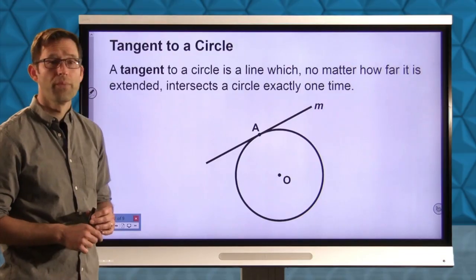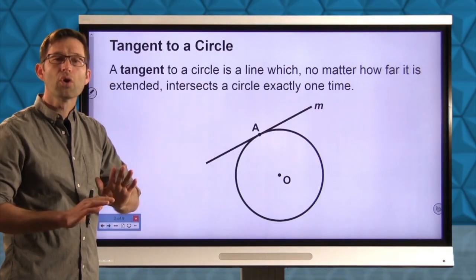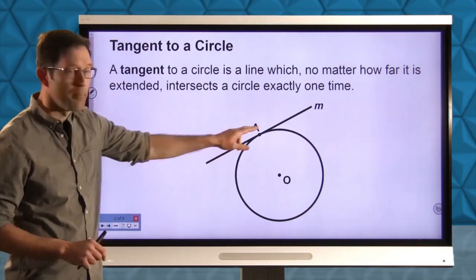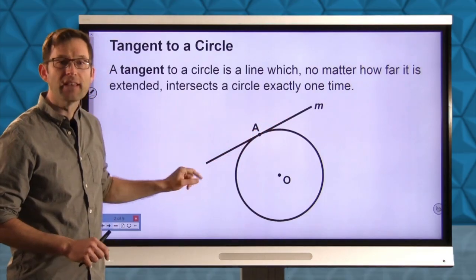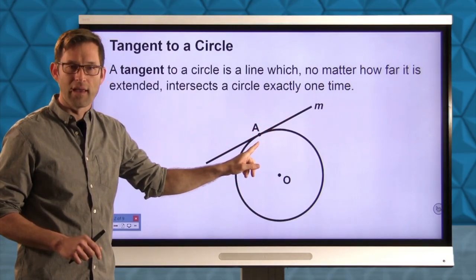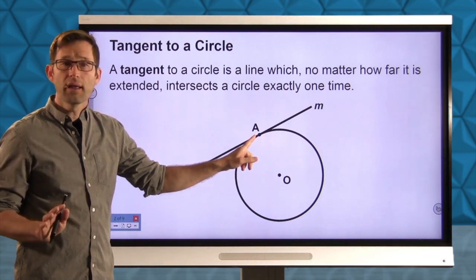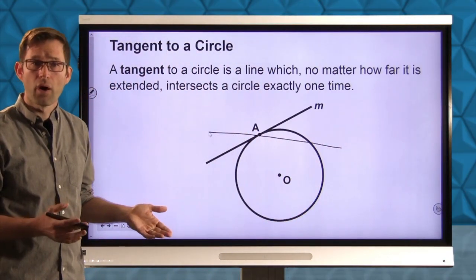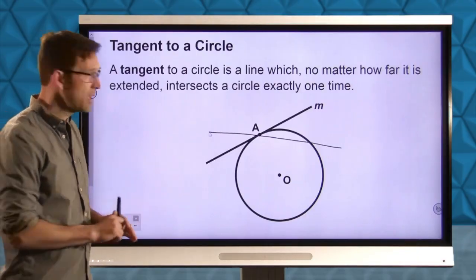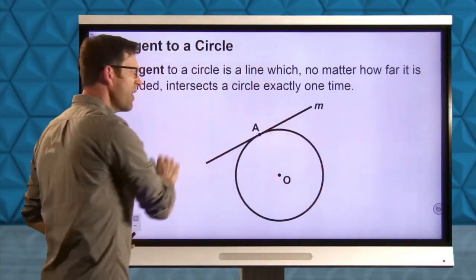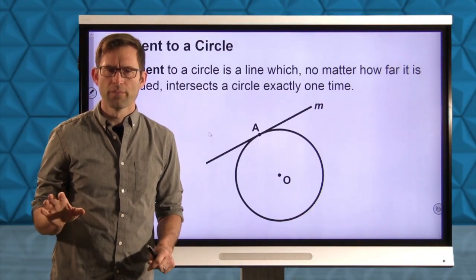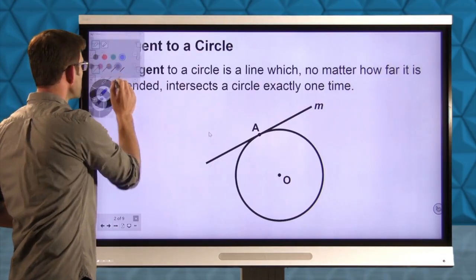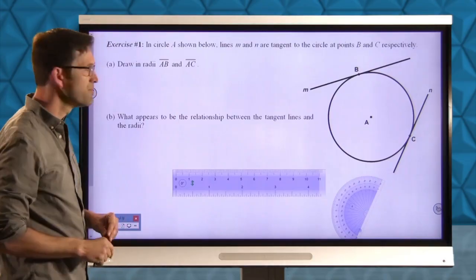Tangent to a circle. A tangent to a circle is a line which, no matter how far you extend it, intersects the circle exactly once. So in this particular diagram, line M is tangent to circle O at point A. And it's not going to hit there any other point. It doesn't do something like this. We'll give a name to that kind of thing later on, but right now that's it. A tangent hits a circle just once and then kind of goes merrily on its way. Let me switch over to blue real quick and then let's start diving in to some work with tangents.